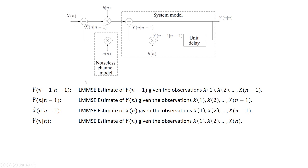Using this notation, we can now define all four different estimates in the block diagram. Starting from the bottom branch, Y-hat of n-1 given n-1 is — at current time step n — the LMMC estimate of Y at the previous time n-1, obtained from the observation of samples of X up to time n-1. The second variable, Y-hat of n given n-1, is the LMMC estimate of Y at time n, but obtained using only the observations of X up to time n-1, i.e., x1, x2, up to x_{n-1}.